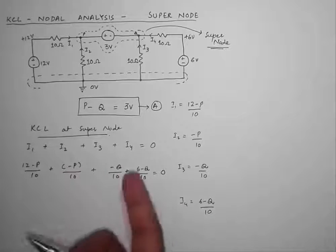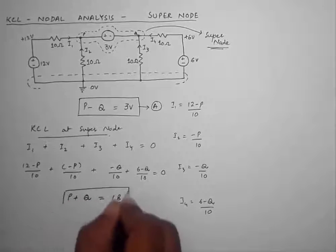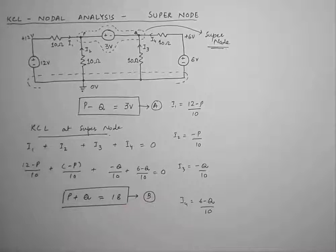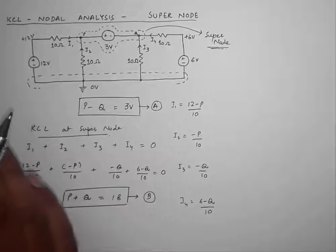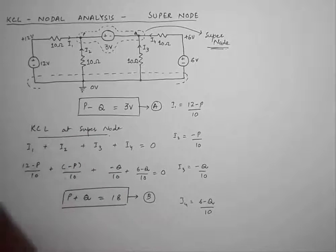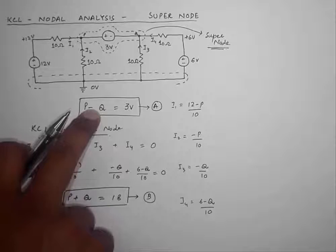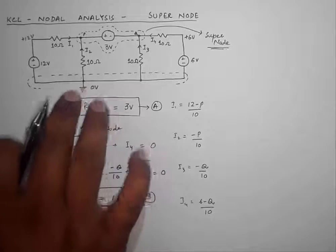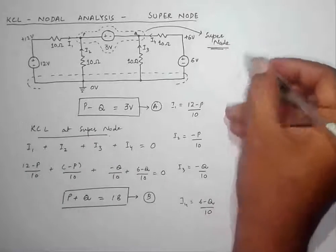I am going to place these currents into the KCL equation and simplify by taking LCM and adding them up. The resultant equation will be P plus Q is equal to 18, and I am going to name this equation B. Now I have two equations and two variables. I can find their values using any method — Cramer's rule, elimination, matrices, augmented matrix, or substitution. I am simply going to add the two equations because the negative Q and positive Q will cancel out.